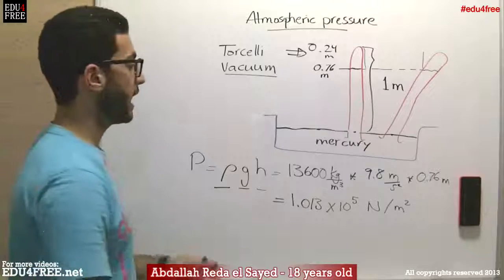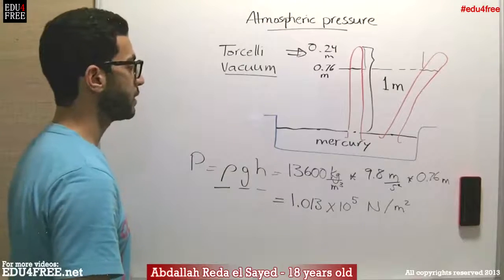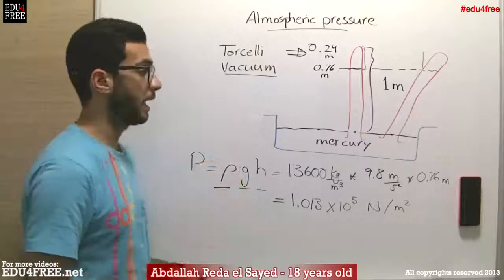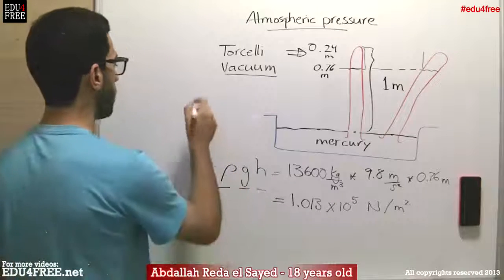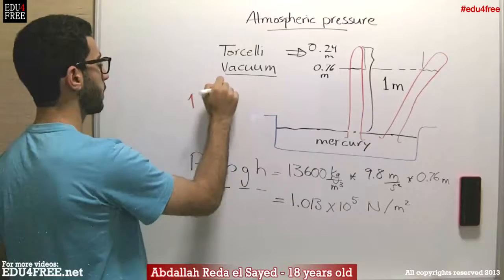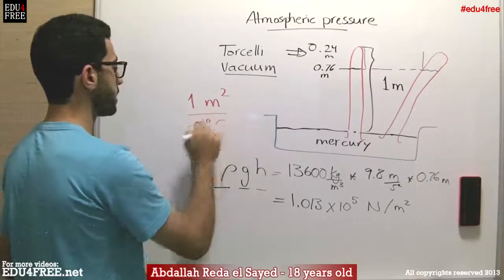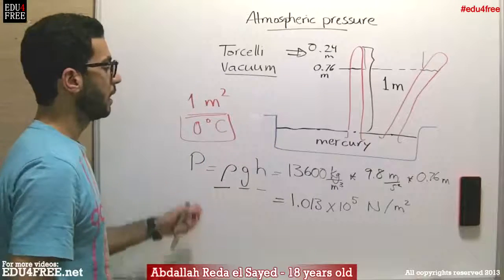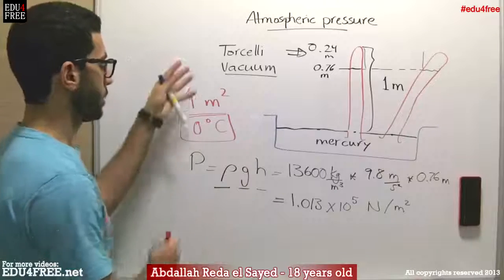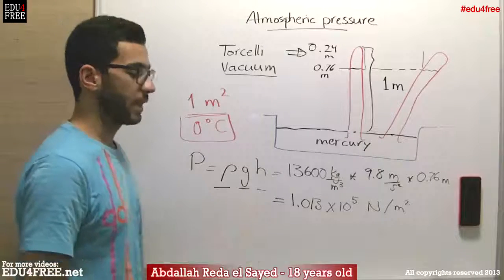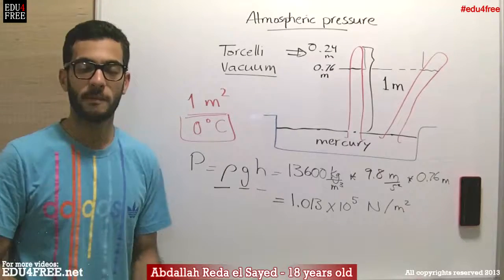We can define atmospheric pressure as the pressure exerted by a column of atmospheric air with a cross-sectional area of 1 square meter at 0 degrees Celsius above sea level. That's how Torricelli managed to calculate the atmospheric pressure. I hope it was clear for you, and until next time, thank you for watching.